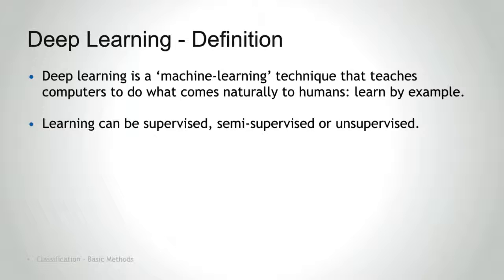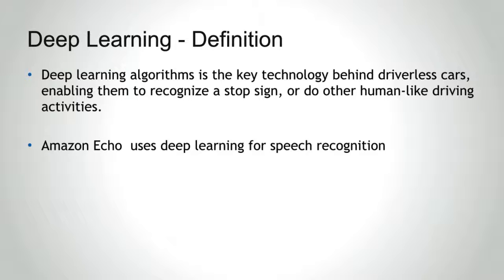Deep learning has evolved hand-in-hand with the digital era, which has brought about an explosion of data in all forms and from every region of the world. This data, also known as big data, is drawn from sources like social media, internet search engines, and e-commerce platforms. Deep learning utilizes a hierarchical level of artificial neural networks, built like the human brain with neural nodes connected together like a web.